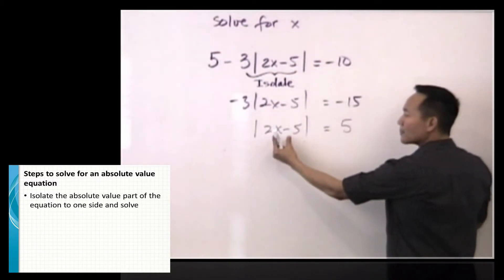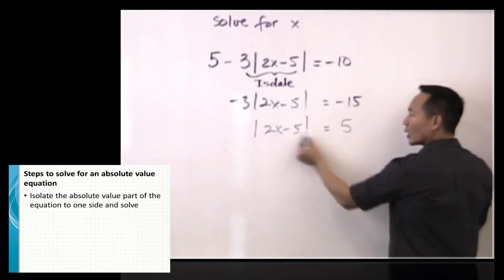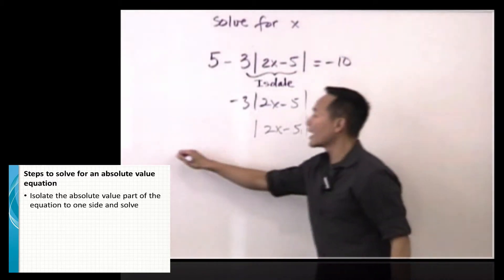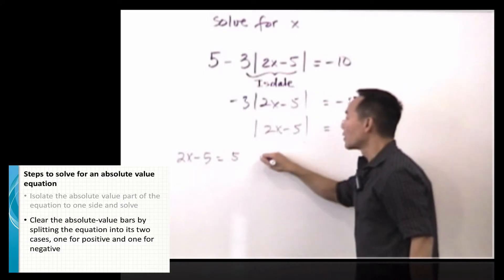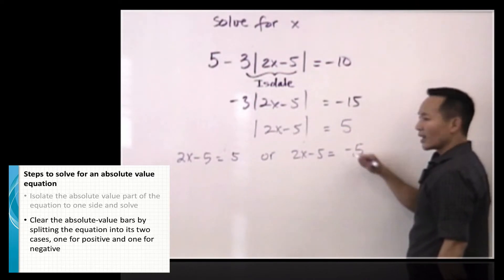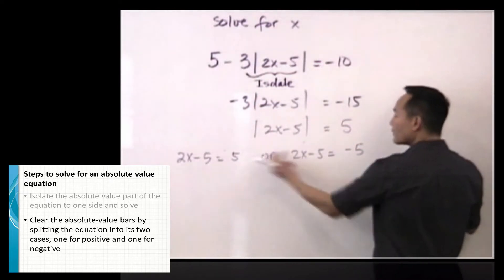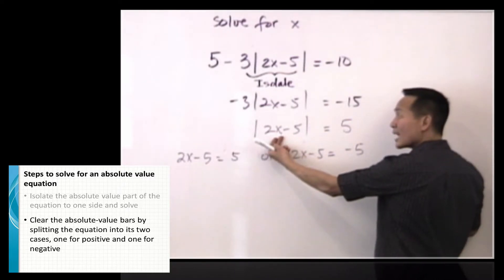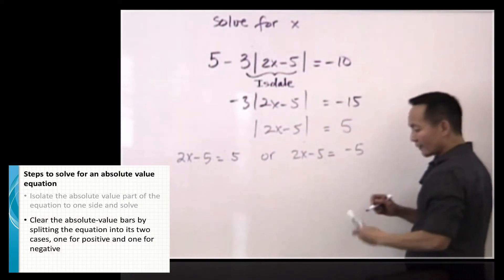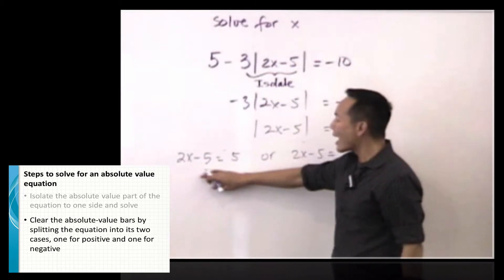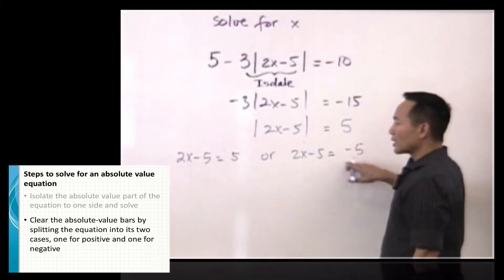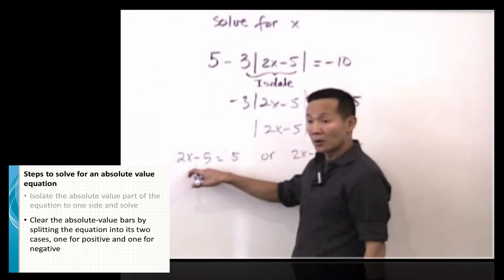Now I am comparing this expression with 5. So the expression 2x minus 5 has to be either 5, or 2x minus 5 equals negative 5. Because if you replace the content inside the absolute value — the expression 2x minus 5 — with 5 or negative 5 and take the absolute value, the answer would be 5. From here we have two linear equations and we can solve for x.